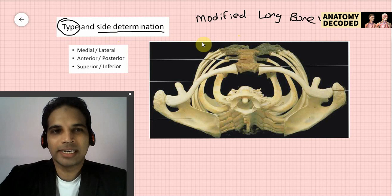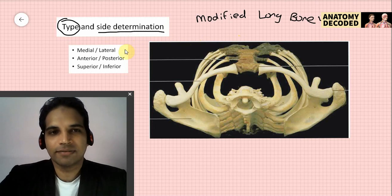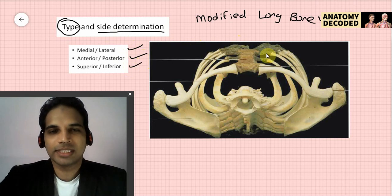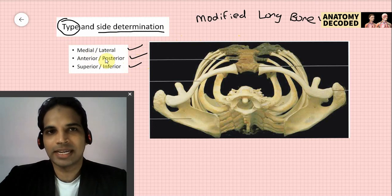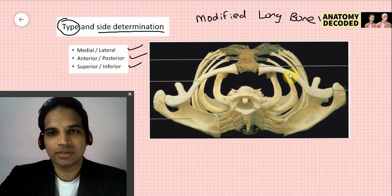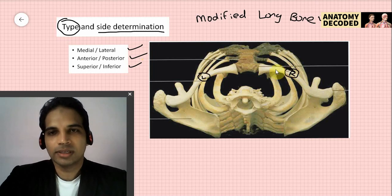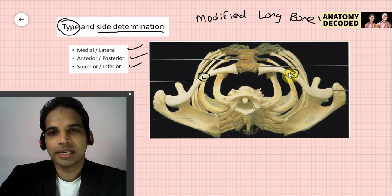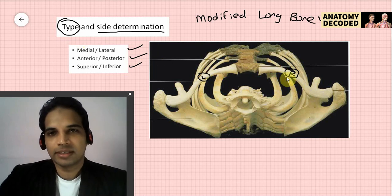For side determination of the clavicle — for any bone, side determination must be justified in three dimensions: medial-lateral, anterior-posterior, and superior-inferior. Whenever we say the side of a bone, we should justify in three dimensions: which part of the bone is medial or lateral, which part is anterior or posterior, and which part is superior or inferior. In this image we can see both clavicles viewed from the superior aspect — this is the right clavicle and this is the left clavicle.